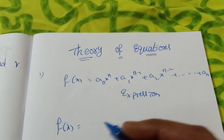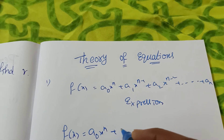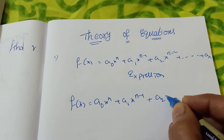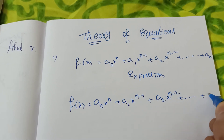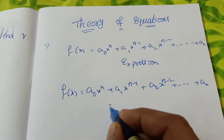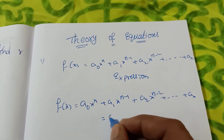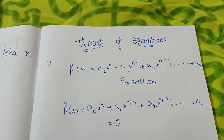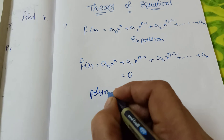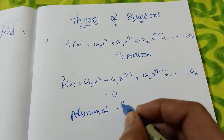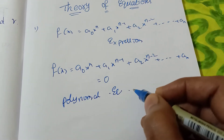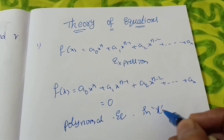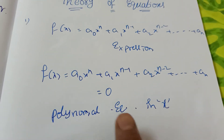Now, for an equation, we set the same expression equal to zero: a₀xⁿ + a₁xⁿ⁻¹ + a₂xⁿ⁻² + ... + aₙ = 0. Setting it equal to zero is what makes it a polynomial equation in x — it has x as the variable.